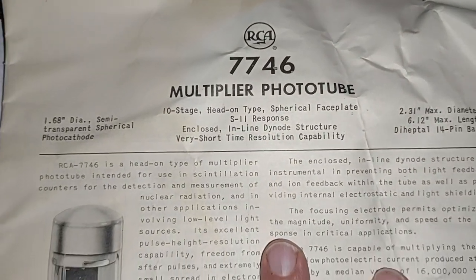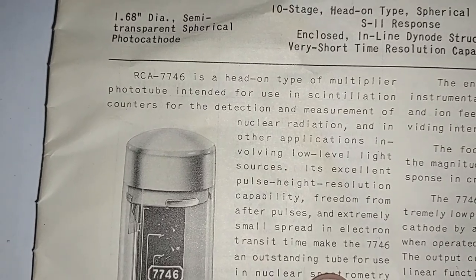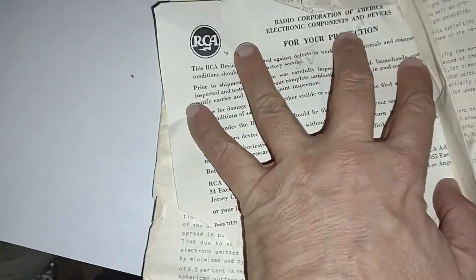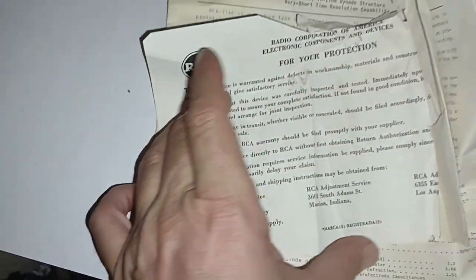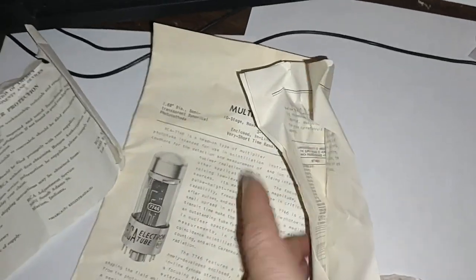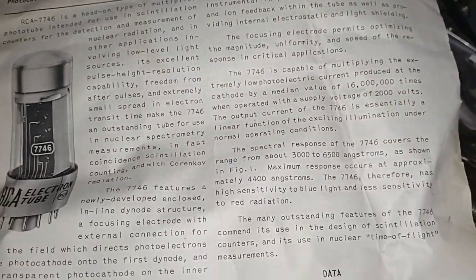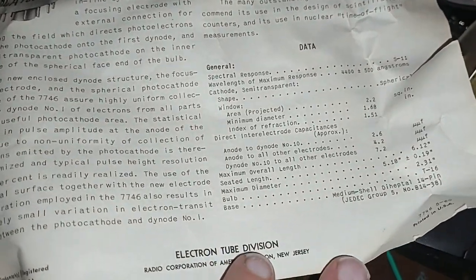Multiplier phototube from RCA, head-on type multiplier tube. Looks like one of the pages ripped here. I'm trying to straighten this out, or maybe this is a separate piece of paper. It comes with it for your protection, there's a warranty against defects and workmanship. So that's a separate piece of paper. Let's just take a look at what else is in this document. Here is the first page, just kind of scan over it. Here's the second page.